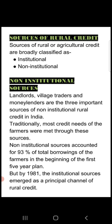The reason was that people did not have full trust in governmental organizations in the villages. But by 1981, institutional sources emerged as a principal channel of rural credit. After 1981, institutional sources became an important channel for rural credit.